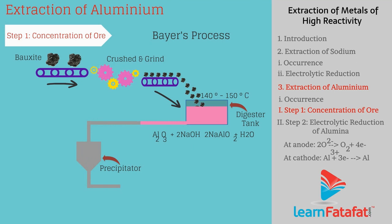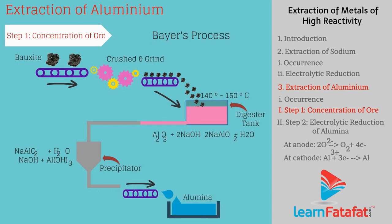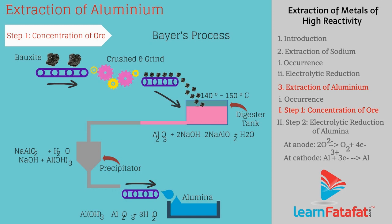Sodium aluminate is then mixed with water and cooled to 50°C, giving aluminium hydroxide as a precipitate: NaAlO₂ + H₂O → NaOH + Al(OH)₃. This precipitate is filtered, washed, dried, and heated at 1000°C to get alumina: Al(OH)₃ → Al₂O₃ + 3H₂O.